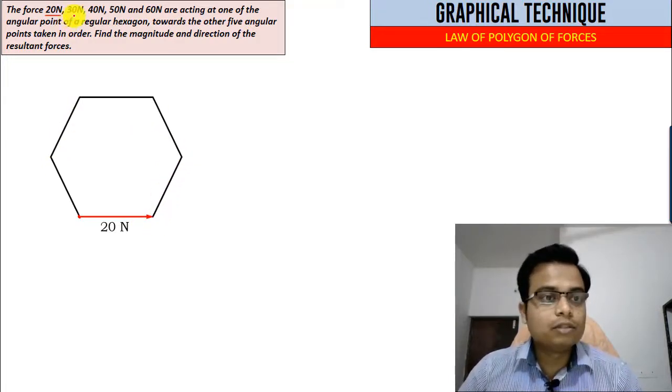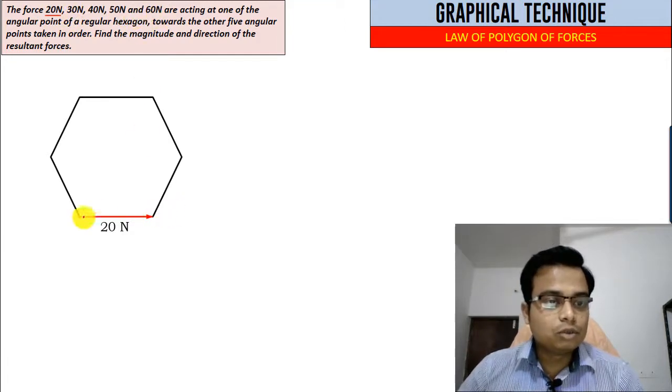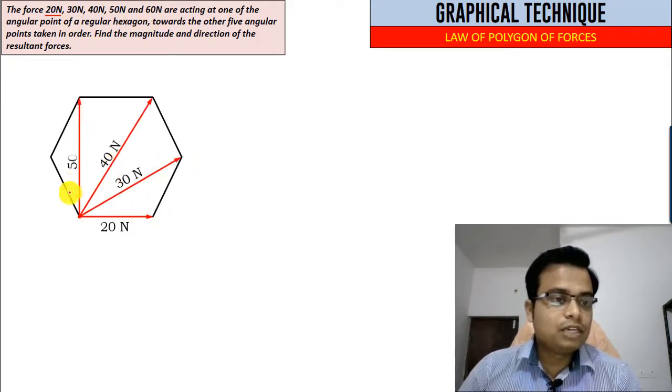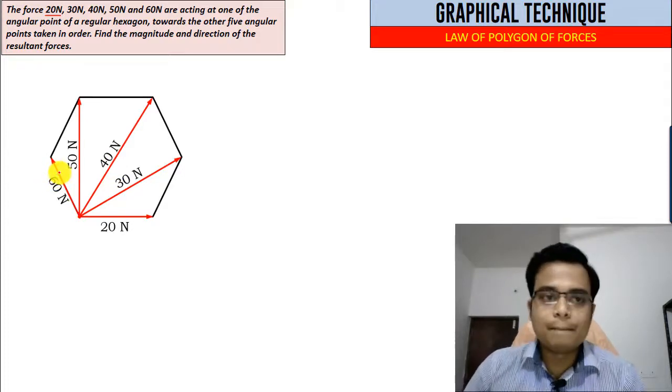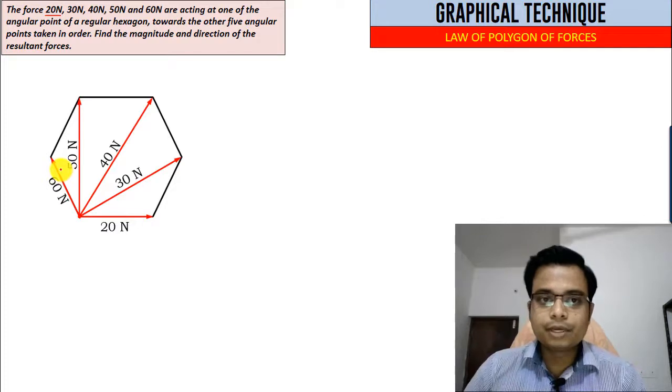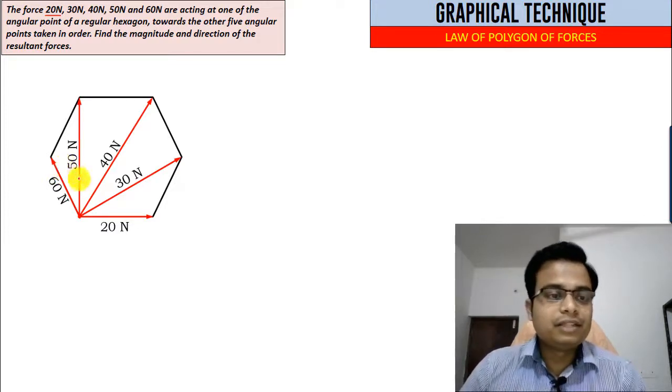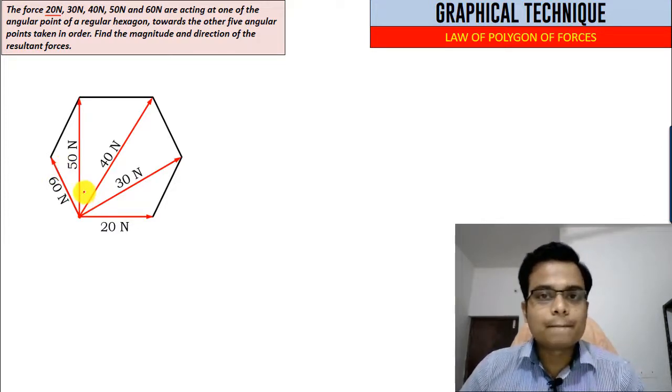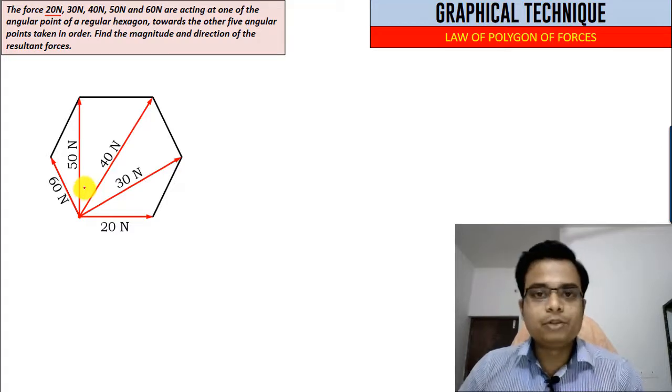30, 40, 50, 60. This is 30, this is 40, that's 50, and finally we have this as a force of 60 Newton magnitude. But what we need to do is find the resultant of all these forces and its direction, so magnitude and direction both have to be found out.